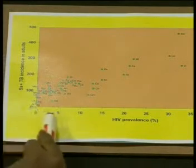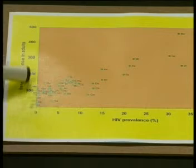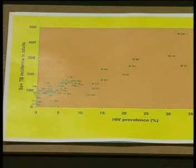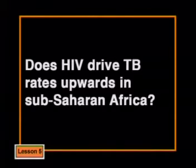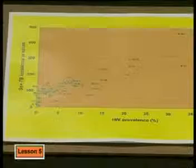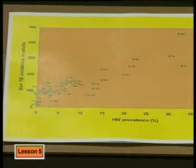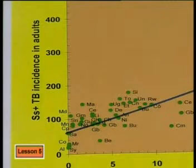On this graph, each point has an x variable and a y variable representing two measurements for each country — a measure of TB cases and a measure of the percentage of the population that is HIV positive. The World Health Organization uses the graph to answer the question: does HIV drive TB rates upwards in sub-Saharan Africa? The researchers expect that countries with higher numbers of HIV positive people also have more cases of TB, so they plot HIV on the x-axis and TB incidence on the y-axis.